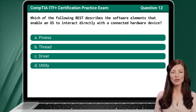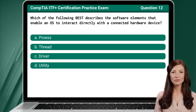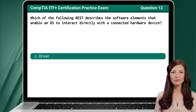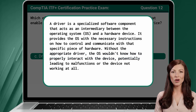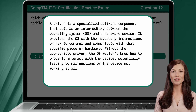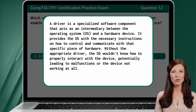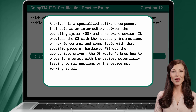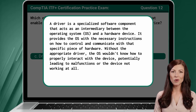Question 12. Which of the following best describes the software elements that enable an OS to interact directly with a connected hardware device? The answer is C: Driver. A driver is a specialized software component that acts as an intermediary between the operating system and a hardware device. It provides the OS with the necessary instructions on how to control and communicate with that specific piece of hardware. Without the appropriate driver, the OS wouldn't know how to properly interact with the device, potentially leading to malfunctions or the device not working at all.